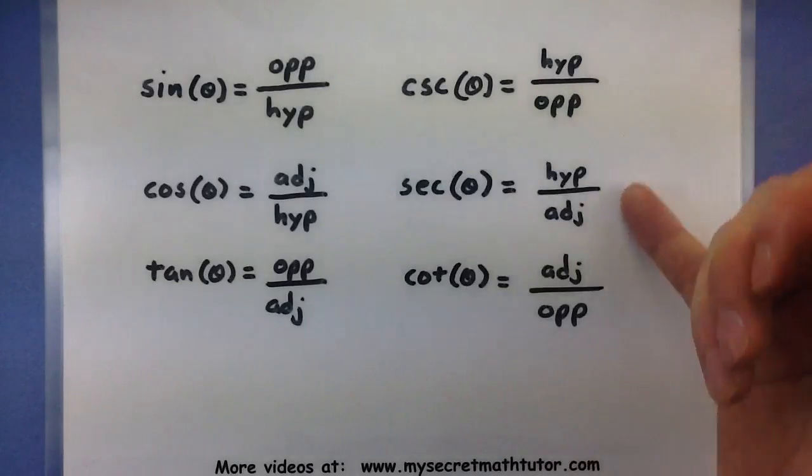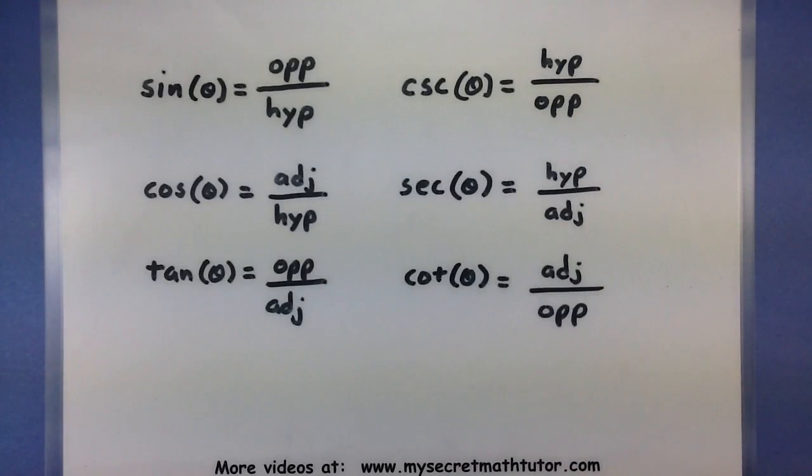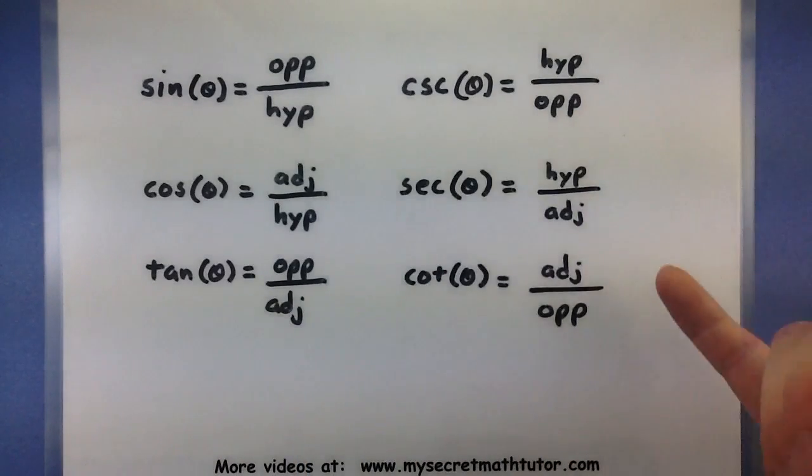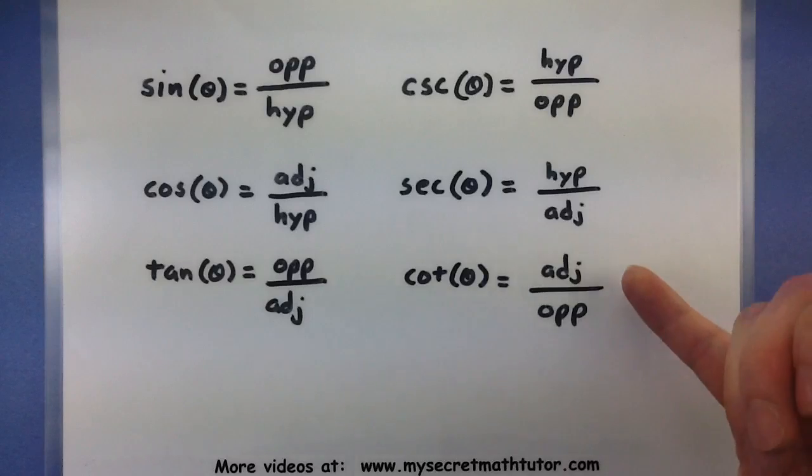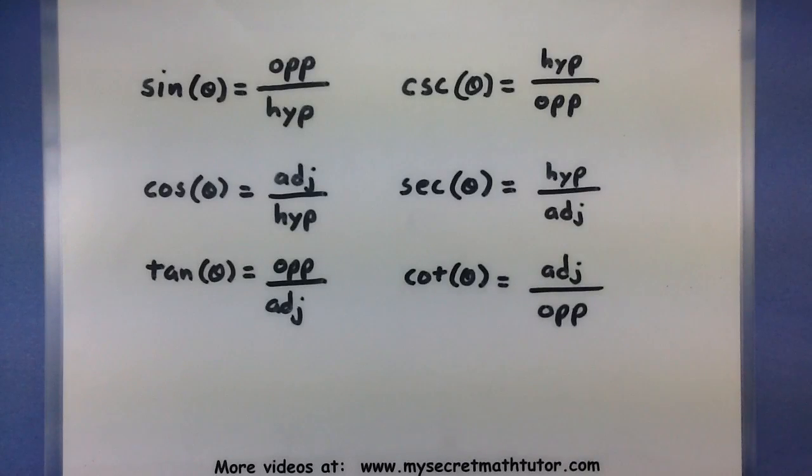The rest of the trigonometric functions are very similar, but they're essentially related to the first three by taking the reciprocal. So hypotenuse over opposite, hypotenuse over adjacent, and adjacent over opposite. I recommend that you probably want to have these first three memorized in case you ever have to use them later on.